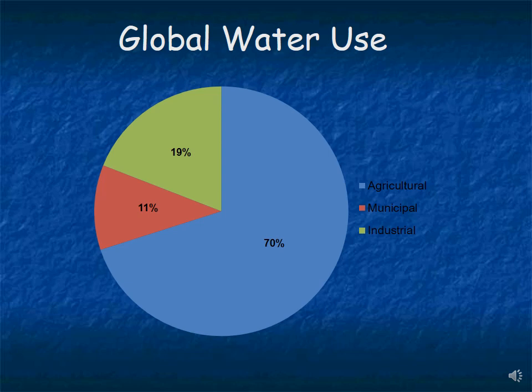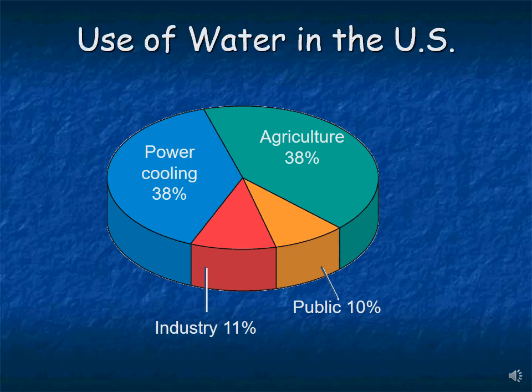Looking at global water use: by far the largest use of freshwater is agricultural — to grow food. As population grows, the need for food and water increases as well. Municipal use — basically cities — is 11%, and industrial uses make up an additional 19%. In the United States it's a bit different: we use roughly 38% of our water for agriculture and cooling for electricity generation, a much smaller fraction than the global average. Public and industrial use is also slightly lower — 11% versus 19% globally.